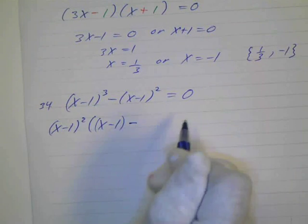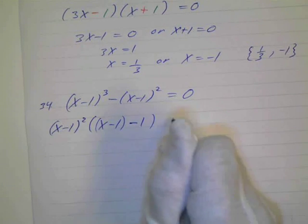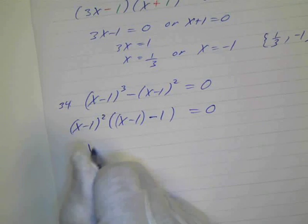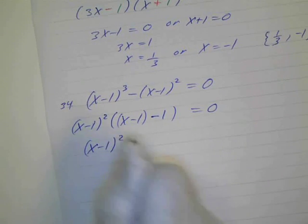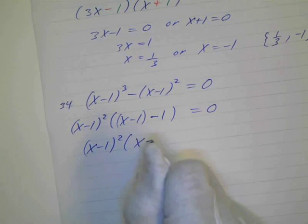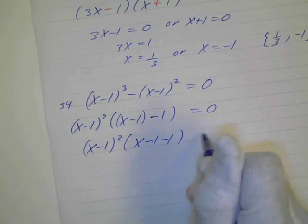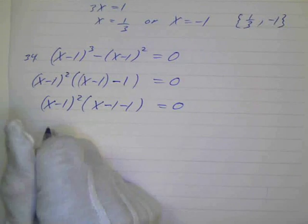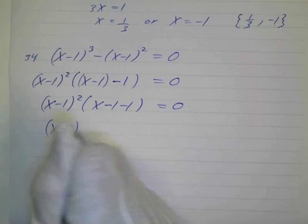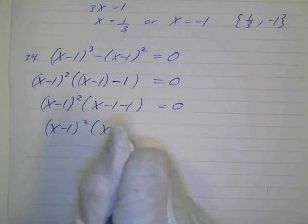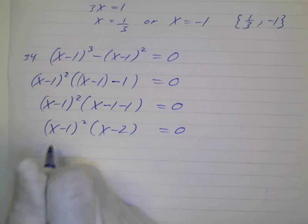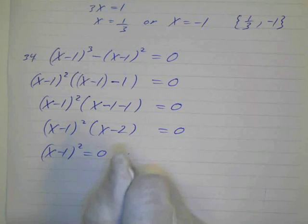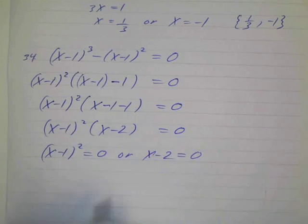And if I factor out x minus 1 squared, that's just 1. So I factor this out of both terms, and then I can simplify this. This is going to be x minus 1 squared, and this is going to be x minus 1 minus 1. So this ends up being x minus 1 squared times x minus 2.